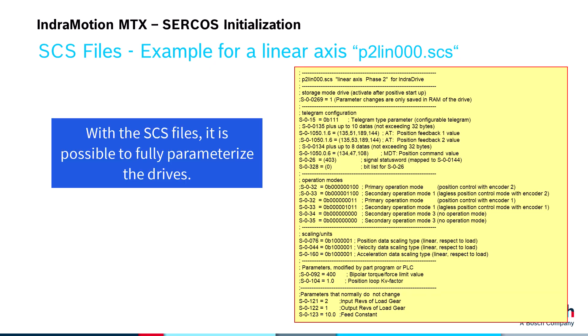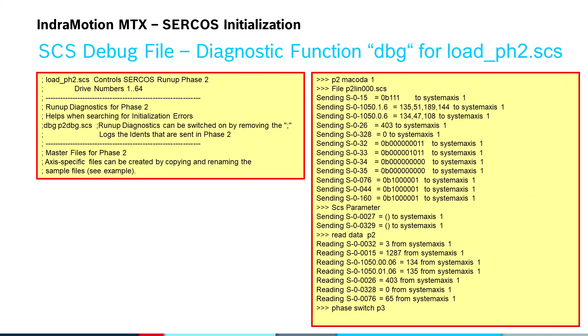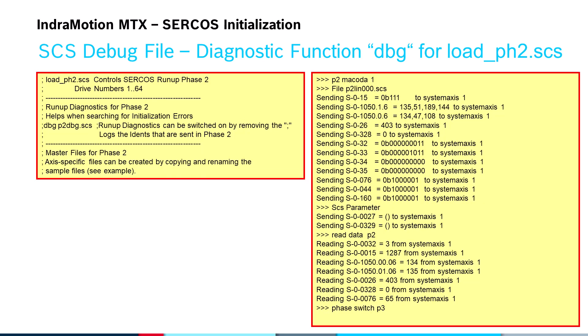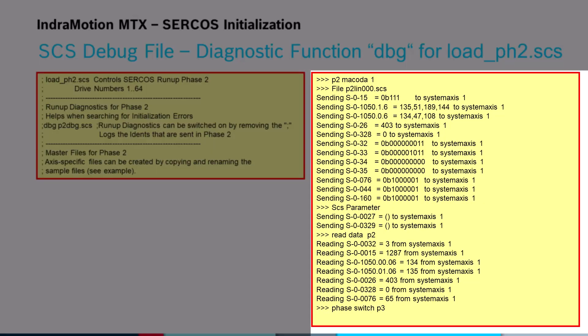So with the SCS files, it is possible to fully parameterize the drive. The SCS configuration file provides a diagnostic function to log all the parameters that are read and written in phase 2. To activate the logging function, you need to remove the semicolon in front of the dbg command in the load_ph2.scs file. The default file name used in the example file is p2dbg.scs. The log files will be saved in the root directory. Here is an example of a log file — you can see which parameters are sent to the drive and which parameters are read from the drive.